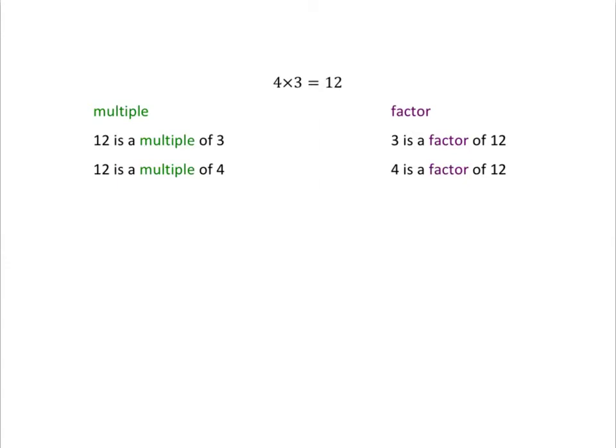Factor is closely related, but almost the other way around. Because 12 is a multiple of 3, it means that 3 is a factor of 12, and similarly, 4 is a factor of 12. If something is a factor of 12, it means that it can divide into 12 without giving you a remainder.